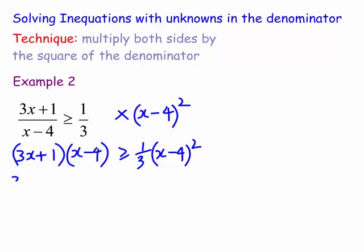now what is this going to be well 3x squared minus 12x plus x minus 11x okay minus 4 okay we multiply by 3 so we're just left with (x-4) all squared here which is x squared minus 8x plus 16.